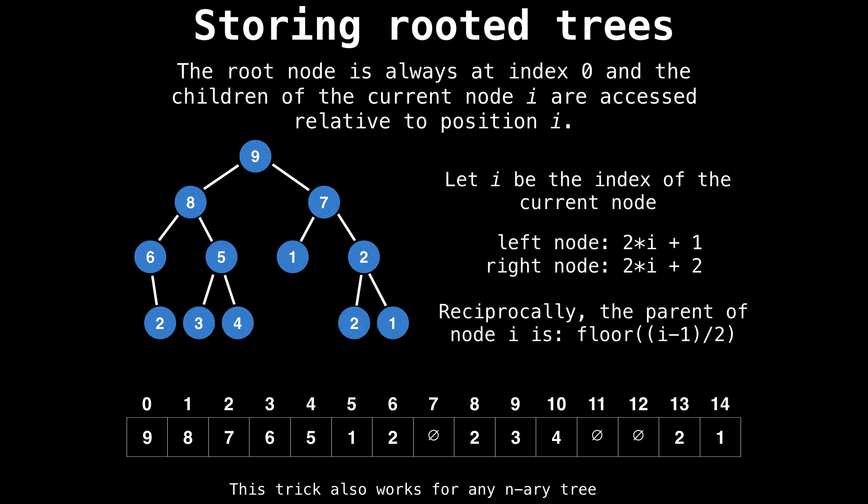Another advantage to this format is that the child nodes of node i can be accessed relative to the position of node i. For example, if we're at position two in the array, we know that the left and the right children of the node at index two is given by two times i plus one, and two times i plus two. Therefore, the children of the node at index two can be found at positions five and six.